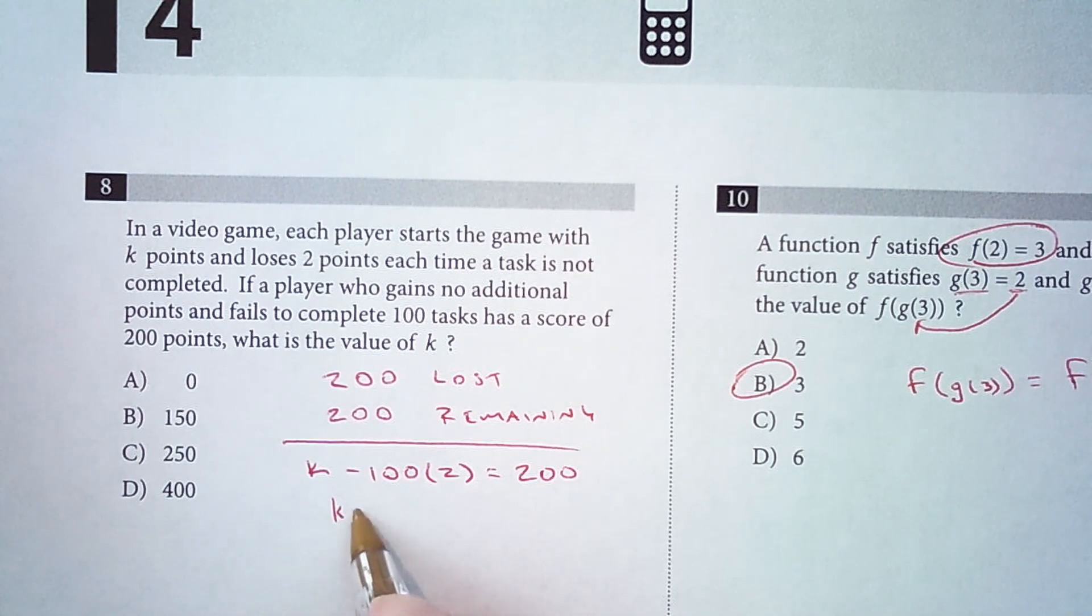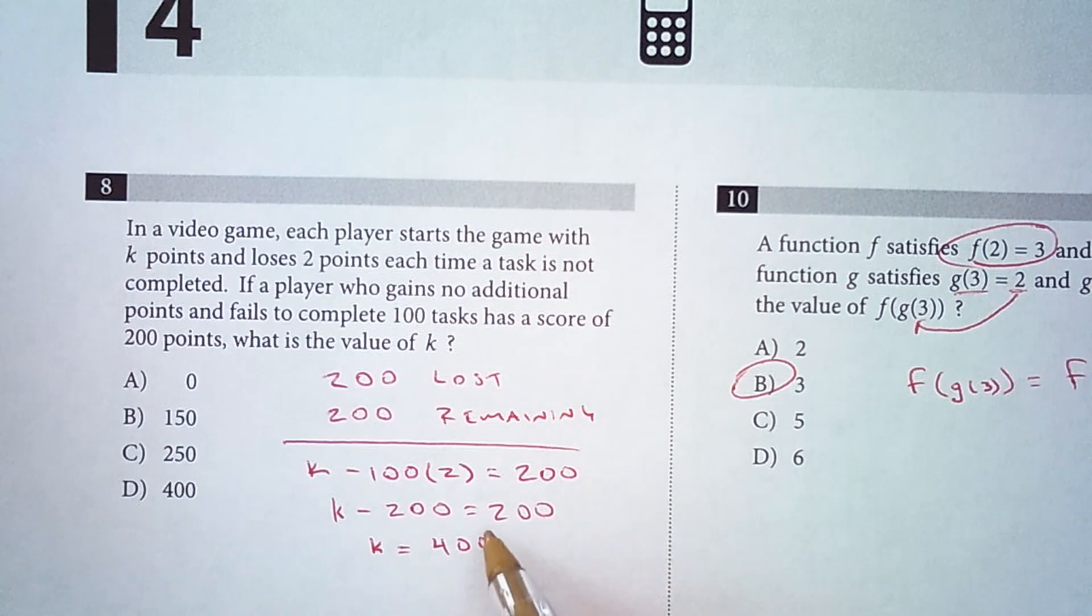Okay, so that's K minus 200 equals 200. And when we add 200 to both sides, we get K equals 400. So either of these two methods would give you 400.